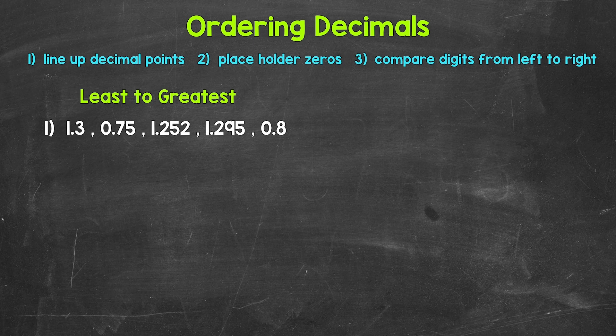Let's jump into number one, where we need to order the decimals from least to greatest. The first thing that we're going to do to help us order these is line them up off to the side, and we're going to line up the decimal points. This is going to line up all of the places. So let's line up all of these right here.